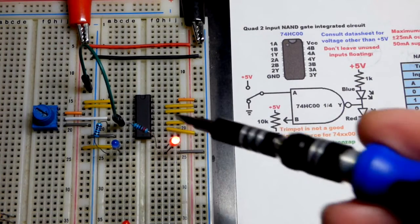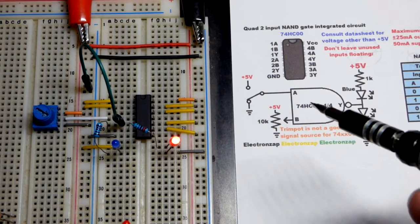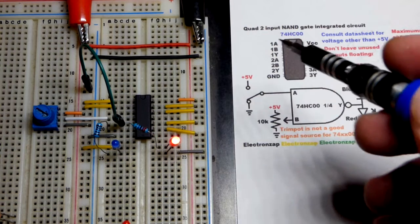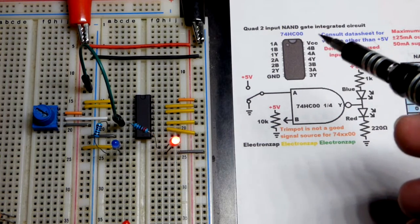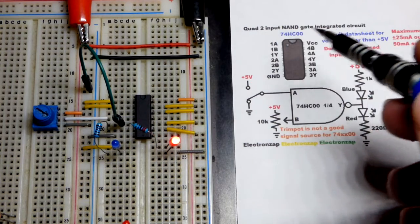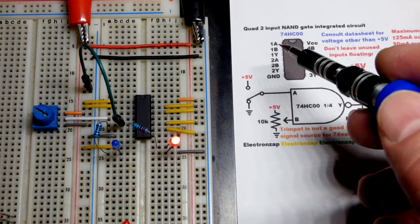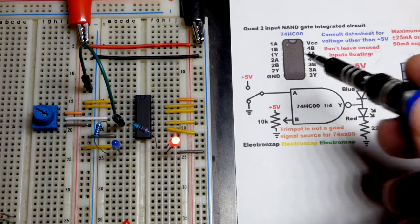The most practical way to make logic gate circuits is with an integrated circuit which has logic gates in it. This is the quad two-input NAND gate. There's two inputs to each NAND gate and there's four NAND gates total.